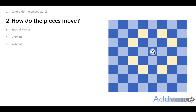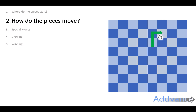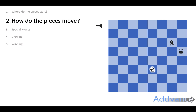Now let's look at knights. Knights can move in an L shape — two spaces one way and one space the other. This knight can jump to these eight squares in this L shape. Knights are the only piece that can jump over other pieces — doesn't matter what colour, black or white. And if an opponent's piece is in the way, it can take that piece off the board as well.